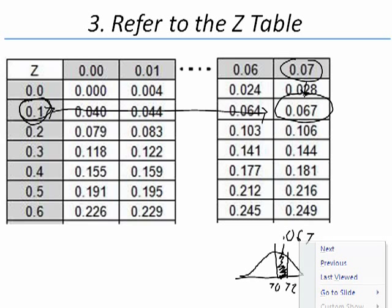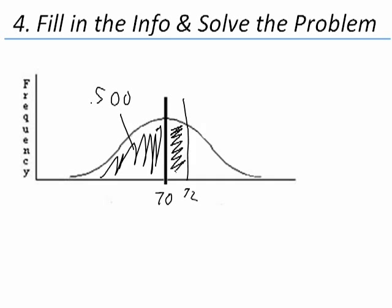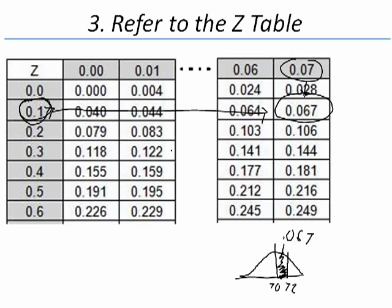Our last step is to go ahead and just solve the problem using the information we found out. So here we are, a mean of 70, our value of 72. We know half the population is below the mean. It's going to be 0.500. And the proportion of the population between 70 and 72 is 0.067.